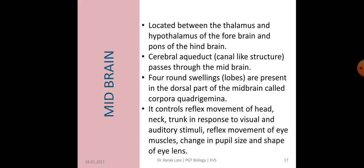Next topic is about midbrain. Midbrain is located between the thalamus and hypothalamus of forebrain and pons of the hindbrain. A canal-like structure, the cerebral aqueduct, passes through the midbrain. There are four round swellings or lobes present in the dorsal part of the midbrain and these are called corpora quadrigemina. Midbrain controls reflex movement of head, neck, trunk in response to visual and auditory stimuli, reflex movement of eye muscles, change in pupil size and shape of the eye lens.